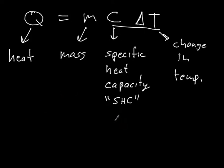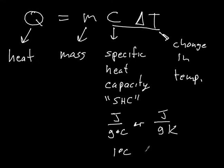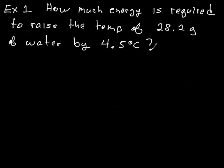Remember that the units for specific heat capacity are going to be expressed as joules per gram degree Celsius. Or you could see that as joules per gram Kelvin. There is no degree sign for Kelvin. A one degree Celsius change is equivalent to a one Kelvin change. So we can just swap those out if we need to. Depending on what units you are given in the problem.